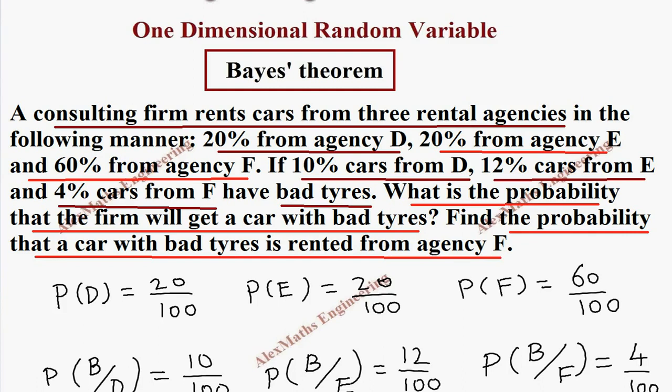From the agency F, so already we know that it is a bad tire and we want to find the probability that the car is rented from agency F. So the term we are going to find is P of F given B—we know it is a bad tire and we want to know the probability it is rented from F.